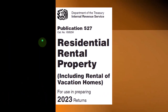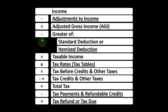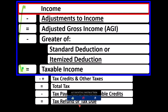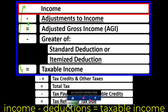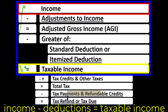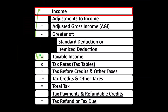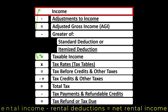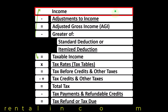Schedule E rental income flows into line one income of the individual income tax formula. The individual income tax formula is basically like a funny income statement — having income minus deductions, resulting in taxable income. The rental income on Schedule E, similar to business income on Schedule C, has an income statement format: rental income minus rental expenses, resulting in net rental income, which flows from Schedule E to line one income of the individual income tax formula.